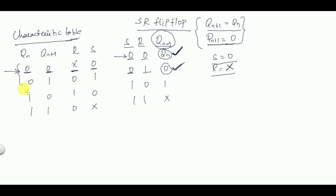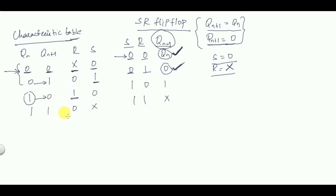When QN=0 and we are making the output 1, we are setting the flip-flop, so S=1. When the present state is 1 and we are making the next state 0, that is resetting the flip-flop, so R=1 and S=0.